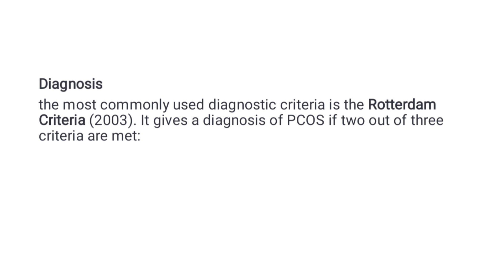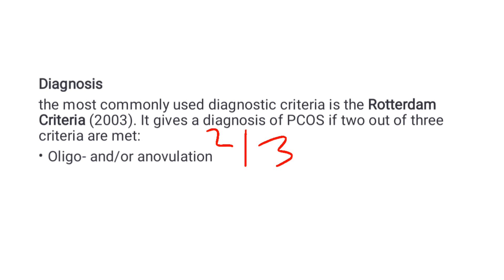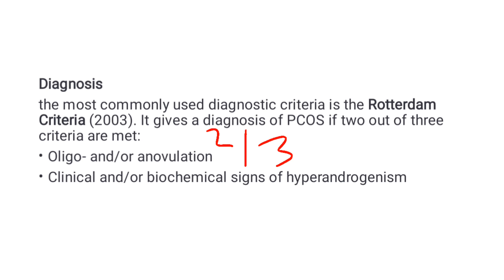To make a diagnosis of PCOS, the most commonly used diagnostic criteria is the Rotterdam criteria, established in 2003. It gives the diagnosis of PCOS if two out of three of the following criteria are met: oligomenorrhea or anovulation; clinical and/or biochemical signs of hyperandrogenism; and polycystic ovaries on imaging.